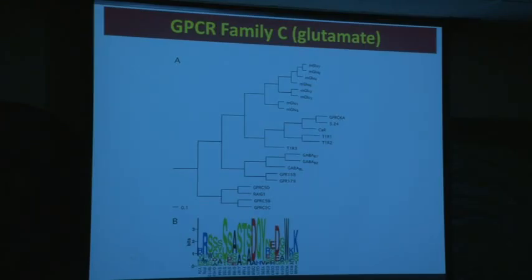And then there are the seven uncharacterized orphans with no known ligands and no known function. GPR-158 is one of those, and also a very closely related gene called GPR-179.